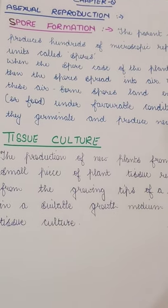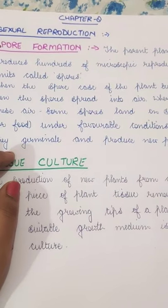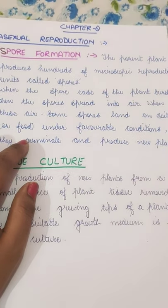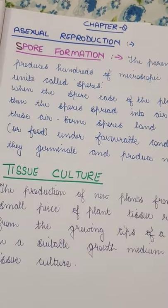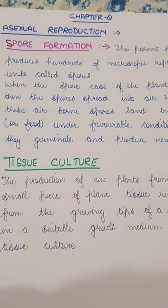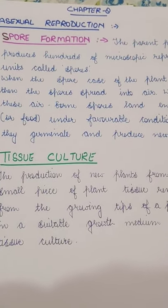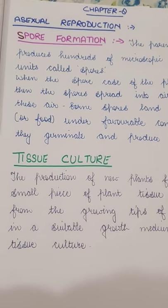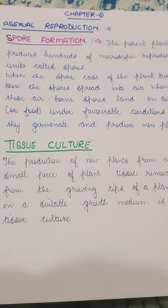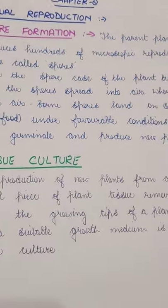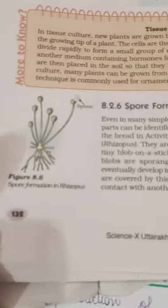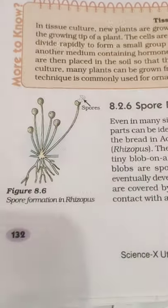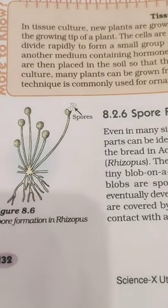The definition: the parent plant produces hundreds of microscopic reproductive units called spores. When the spore cases burst, the spores spread into the air. When these airborne spores land on food or under favorable conditions, they germinate and produce new plants. The most common example of spore formation in the book is rhizopus.